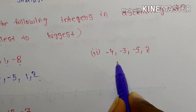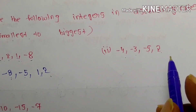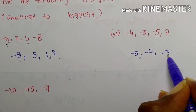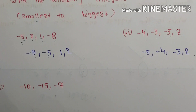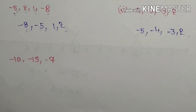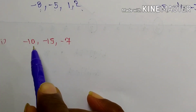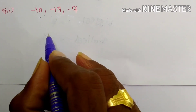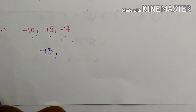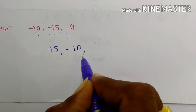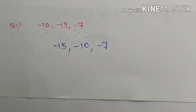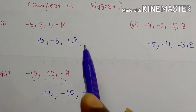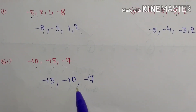In the same way, for the next set: minus 4, minus 3, minus 5, 2. Ascending order from smallest to biggest: minus 5, minus 4, minus 3, 2. Next set: minus 10, minus 15, minus 7. The smallest is minus 15, then minus 10, then minus 7. Ascending order: minus 15, minus 10, minus 7.